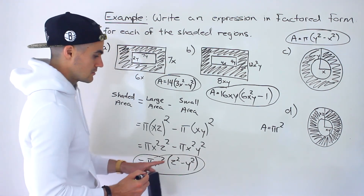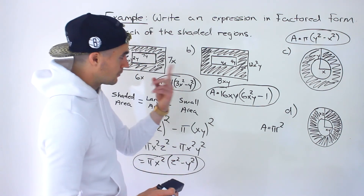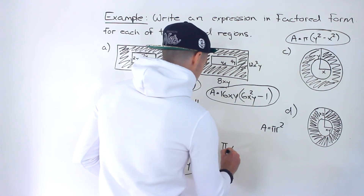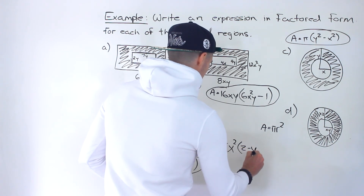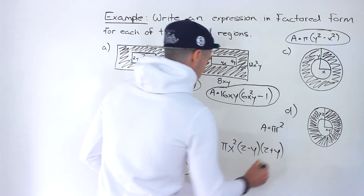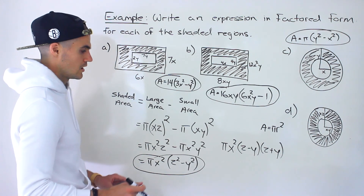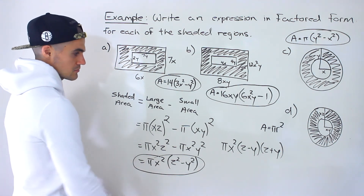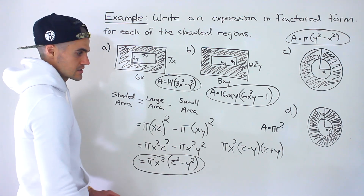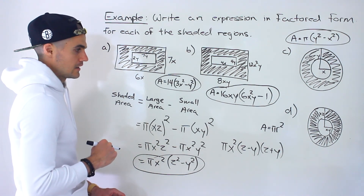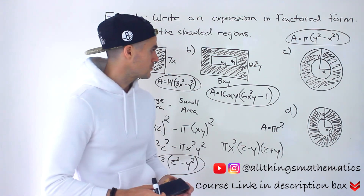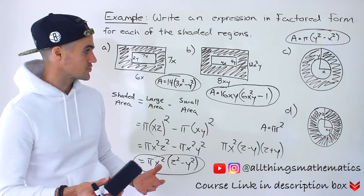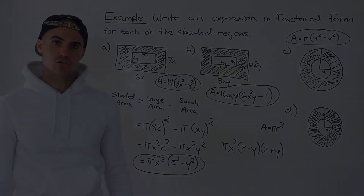Factoring πx²z² − πx²y²: we can take out π and x² since both are common to each term. This gives πx²(z² − y²). We can't take out z or y since neither appears in both remaining terms. The factored answer is πx²(z² − y²). Like part C, this bracket is a difference of squares and factors further into (z − y)(z + y), which we'll cover in a future section. These circled expressions are the factored form for the area of each shaded region.